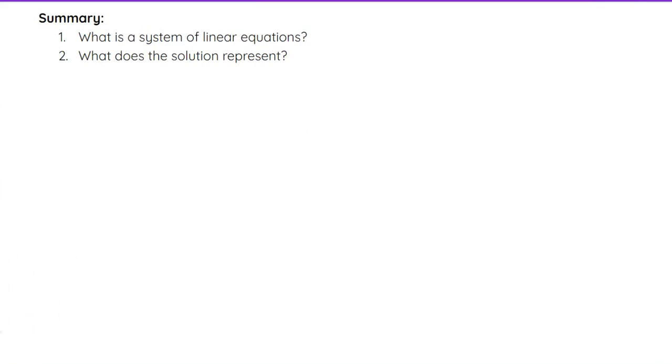So that was a quick video, but again, just wanted to touch on that system of linear equations. So we've got two variables and two equations. Typically, it's x and y, but it could be any two variables. And the solution, remember, is going to be that point where they cross. That's what it actually represents. And we always write that as an ordered pair, x comma y, whatever those numbers are.